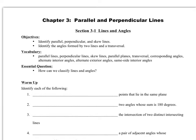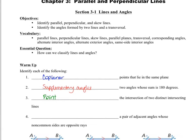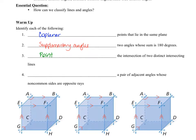For our warm-up: blank points that lie in the same plane — that is clearly coplanar points. The next one is blank, two angles whose sum is 180 degrees — supplementary angles add up to 180 degrees. The next one says blank is the intersection of two distinct lines — intersecting lines, and we know that two lines intersect at exactly one point. Number four, blank is a pair of adjacent angles whose non-common sides are opposite rays — that is clearly describing a linear pair.